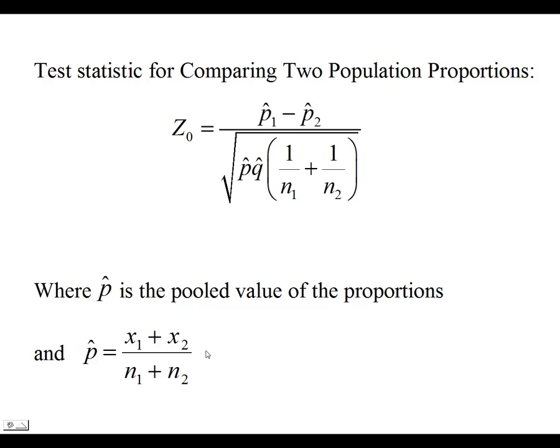So how we pool the proportions is we add up each of the successes, the number of successful values in the first population, the number from the second, or sample, I should say, over N1 plus N2.